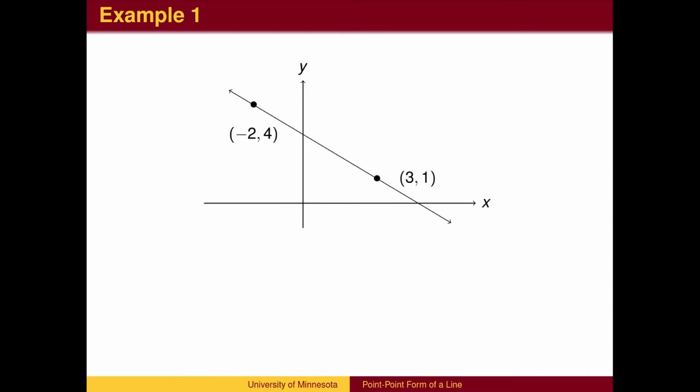Suppose we wish to find the equation of a line through the points negative 2, 4 and 3, 1. Given two points, we can use the slope formula to find the slope of the line.